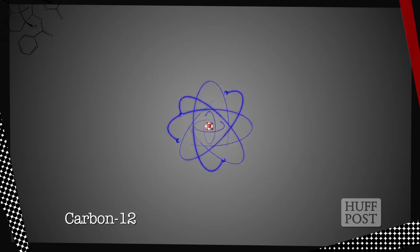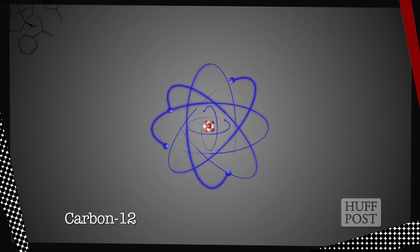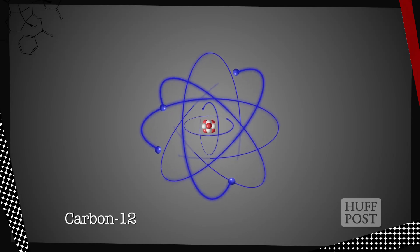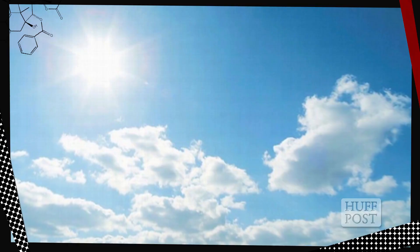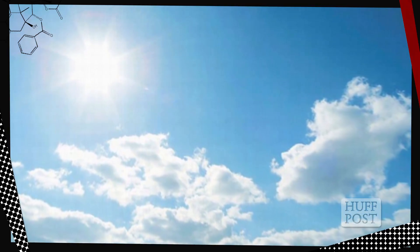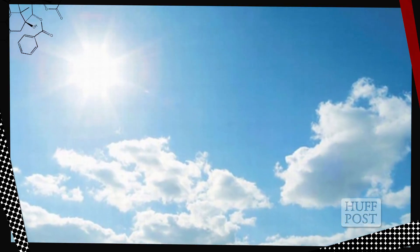All living things contain carbon, which has six protons and six neutrons, so in its typical form we call it carbon-12. But at any given time, there are trace amounts of carbon-14, or C-14, in the atmosphere. C-14 is a radioactive isotope that's made when cosmic rays bombard nitrogen atoms at high altitudes, converting them into this excited form.